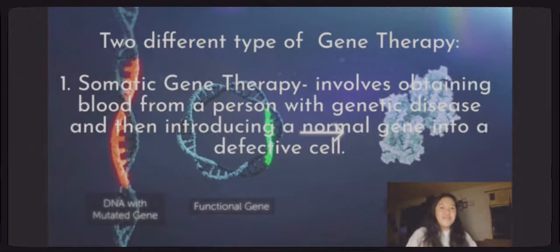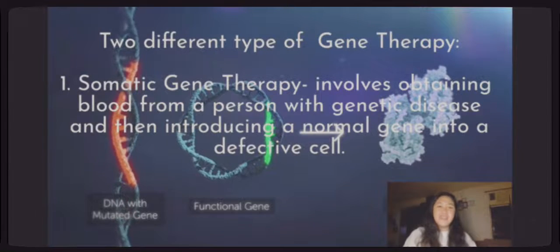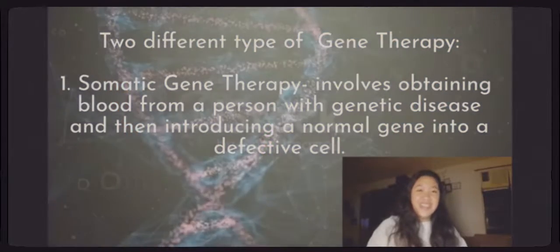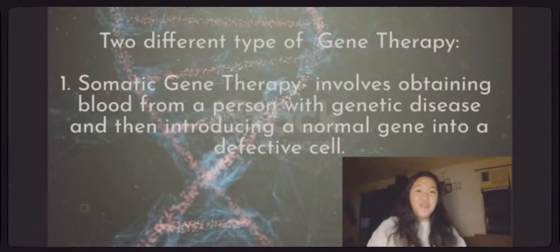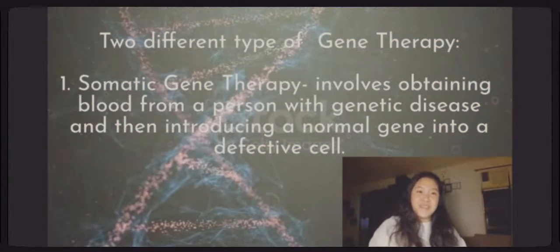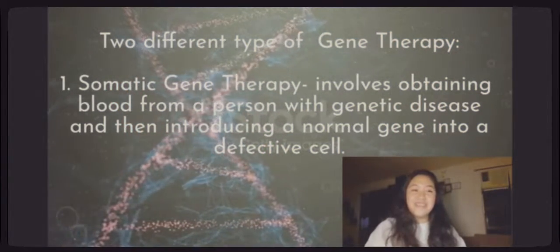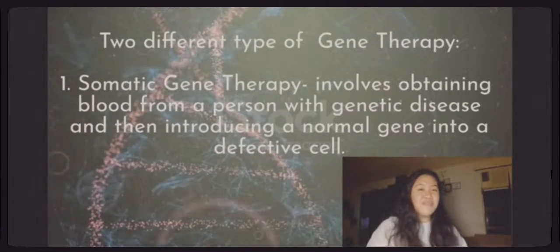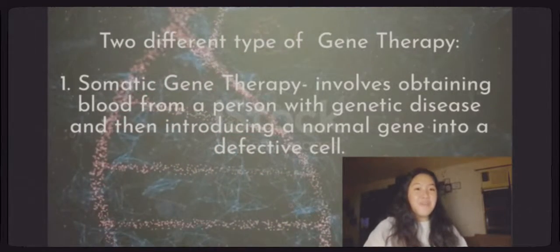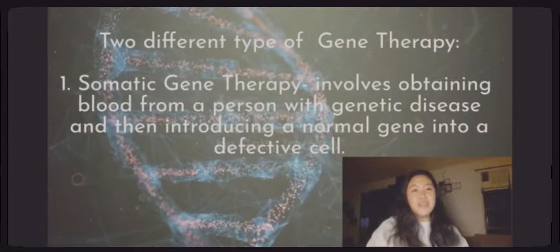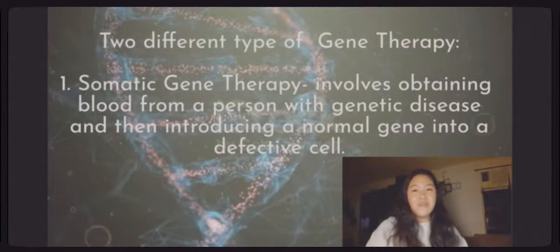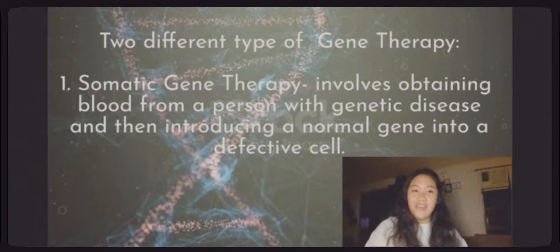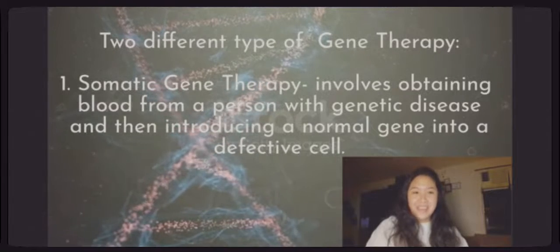There are two different types of gene therapy depending on which type of cells are treated. Somatic gene therapy involves obtaining blood cells from a person with a genetic disease and then introducing a normal gene into a defective cell. This type of gene therapy does not prevent the disease from occurring in the next generation because it does not affect the sperm and egg cells.